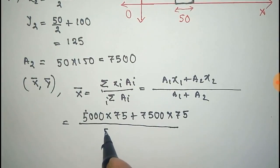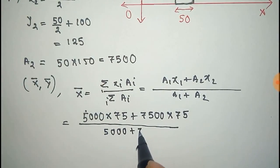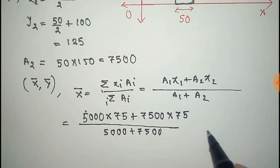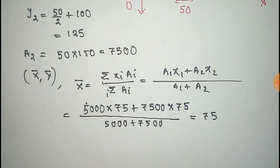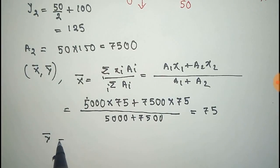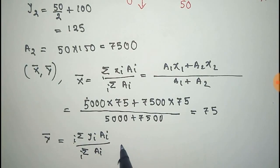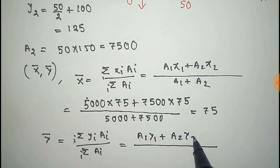After calculation, we get 75. Now for y-bar, which is sum over i of yi times Ai divided by sum over i of Ai, this equals (A1 times y1 plus A2 times y2) divided by (A1 plus A2).